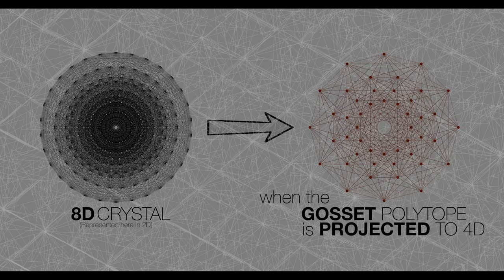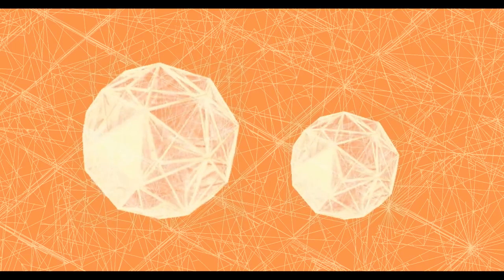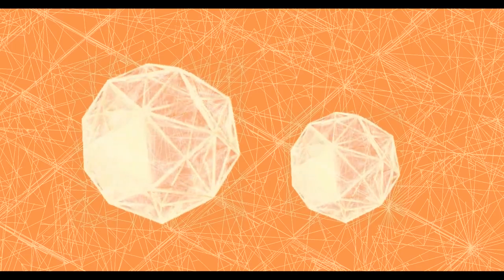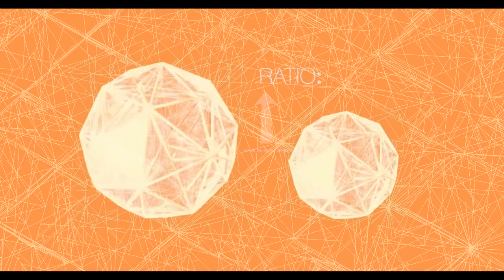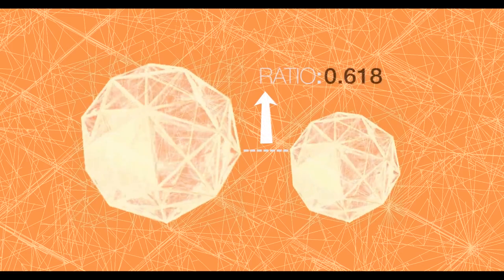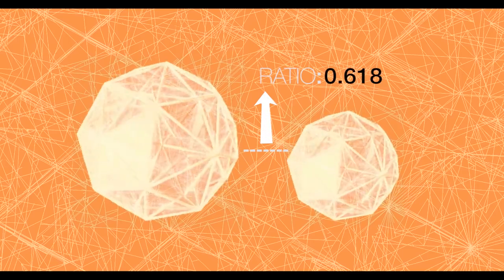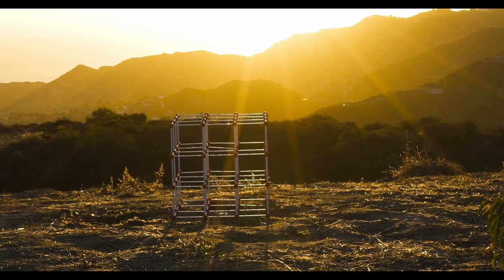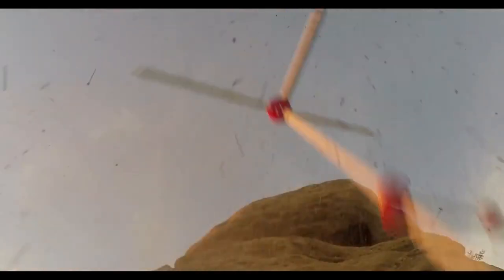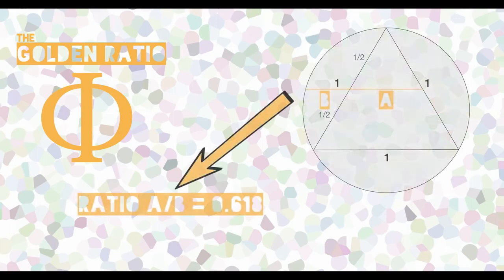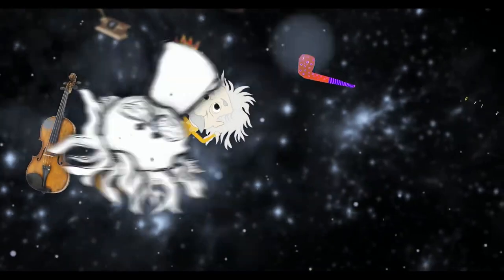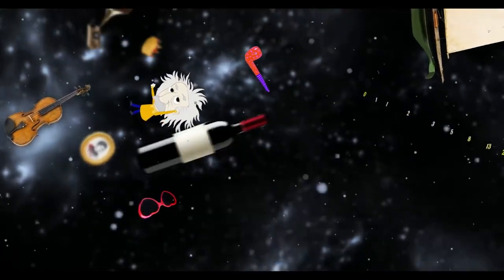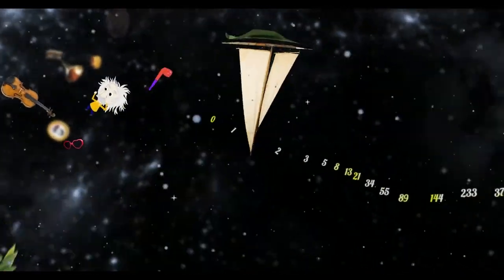When the Gossett polytope is projected to 4D, it becomes two identical shapes of different sizes. The ratio of their sizes is a unique number — 0.618 — also known as the Golden Ratio. The Golden Ratio may be the fundamental constant of nature. It is a ratio that is fundamental to circumscribed equilateral triangles and it's weirdly ubiquitous in the universe, appearing everywhere from the quantum to celestial scales.